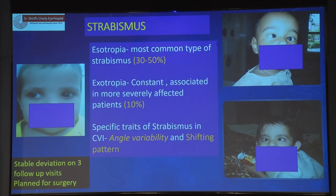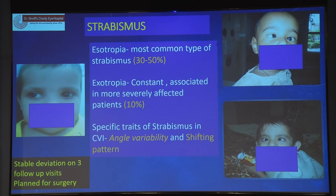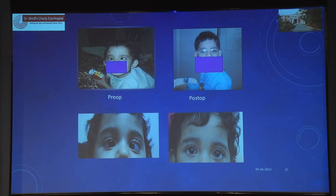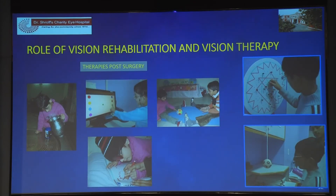Strabismus is very high in these children — esotropia and exotropia are common with angle variability and shifting patterns. Do not operate very early — at one or two years of age — unless there is a constant deviation and the child is showing some fixation, otherwise you will end up with consecutive exotropia. Wait until the deviation is stable and other motor conditions are stable. Operating early before two years of age shows no improvement in sensory outcomes or stereopsis. There should be a very high focus on vision therapy and vision rehabilitation.